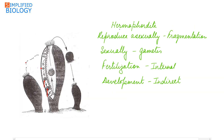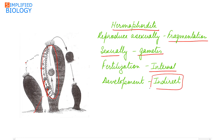Sponges are hermaphrodites, meaning they have both male and female gametes. They reproduce asexually by fragmentation — if any part separates, it has the capability to form a new organism. They also reproduce sexually by means of gametes, where fertilization takes place internally inside the sponge, and development is indirect, meaning there is a larval stage which morphologically differs from the adult.